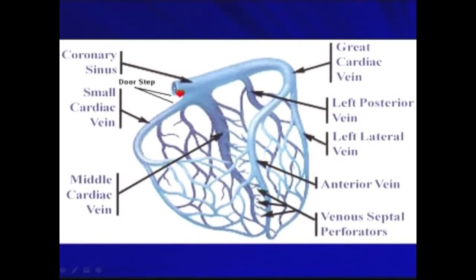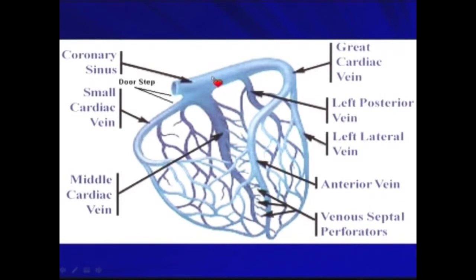Here is the coronary sinus system. The middle cardiac vein branches out shortly after the ostium. The main vessel continues, giving rise to the left posterior vein and the great cardiac vein coming anteriorly. On the lateral aspect, it gives rise to the left lateral vein, then continues anteriorly as the anterior vein. This coronary venous system is especially important when we perform left ventricular pacing, also called cardiac resynchronization therapy.